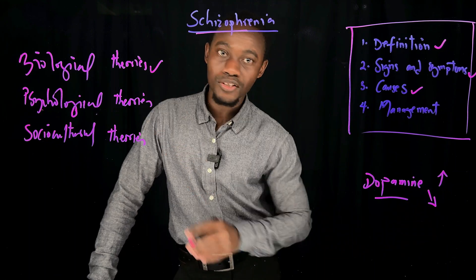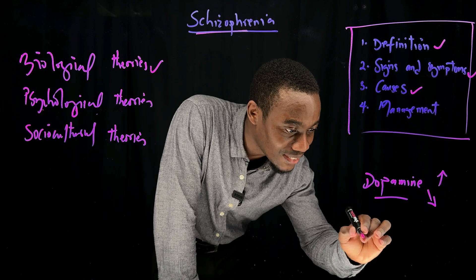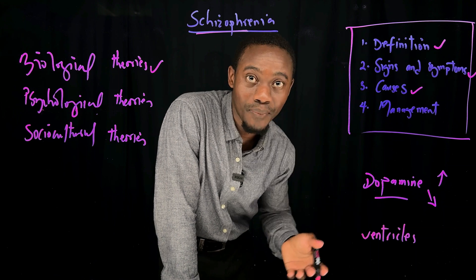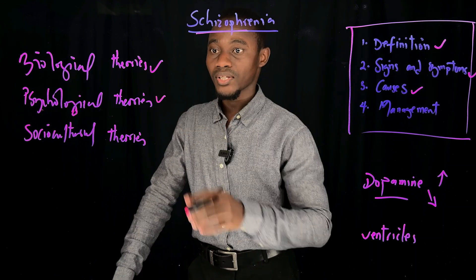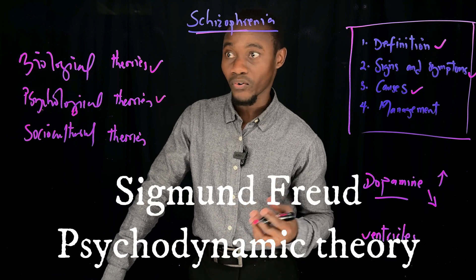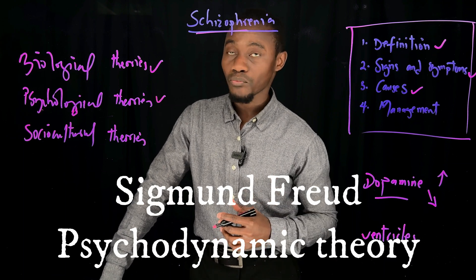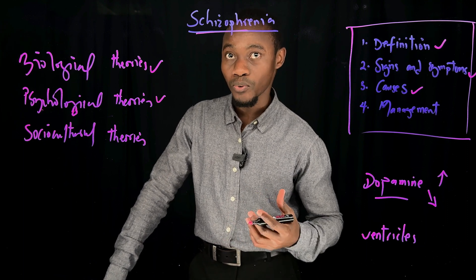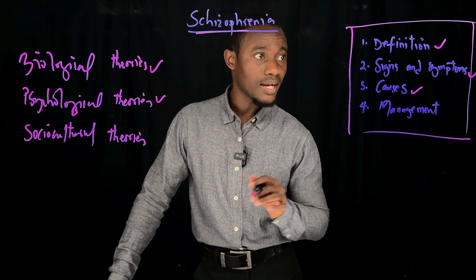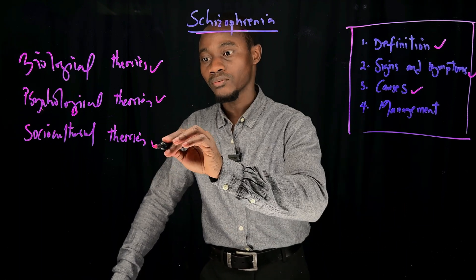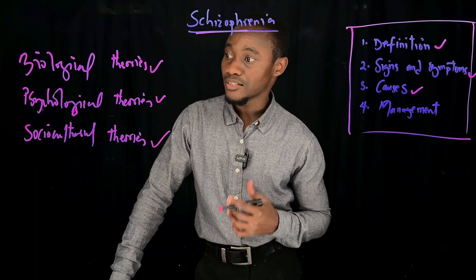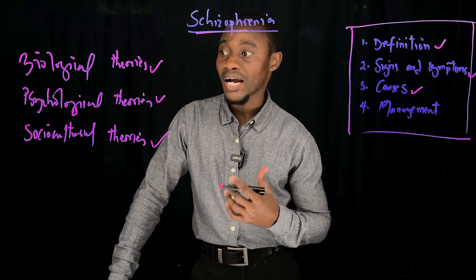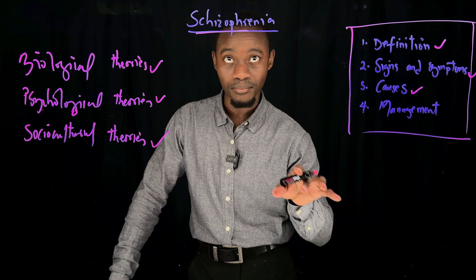Under the psychological theories, the most important explanation is by Sigmund Freud — the psychodynamic approach — which holds that when an individual regresses to an earlier stage of development, they become predisposed to developing Schizophrenia. Finally, under the sociocultural theories, notable explanations have to do with family dynamics such as parental conflict, sibling rivalry, and abuse and neglect of children, which all predispose individuals to developing Schizophrenia.